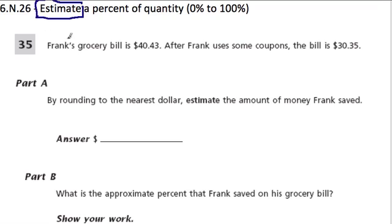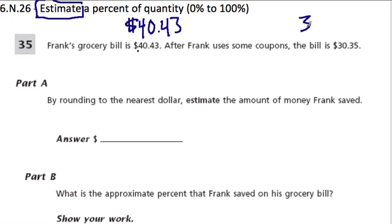Let's look at this problem. Frank's grocery bill is $40.43. After Frank uses some coupons, the bill is $30.35. By rounding to the nearest dollar, estimate the amount of money Frank saved.